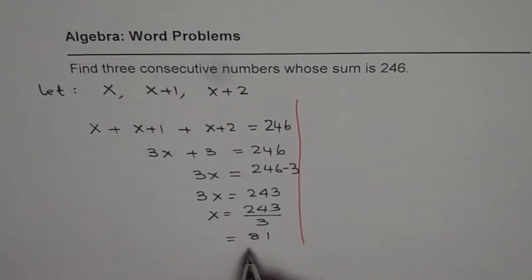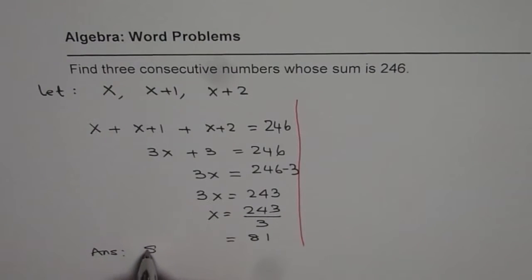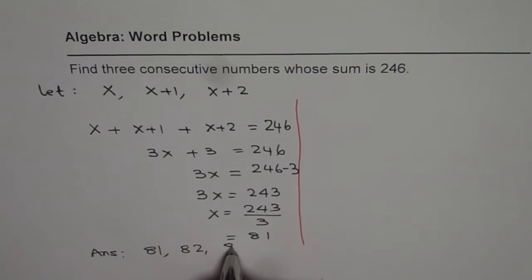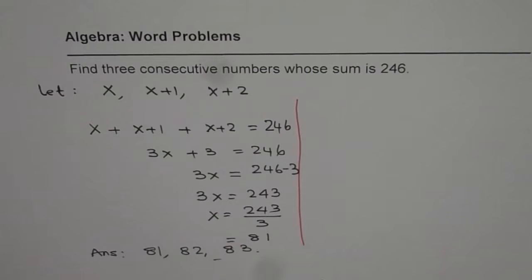So, the numbers are, our answer is that the numbers are 81, 82, and 83. So, 3 consecutive numbers. That is our answer.